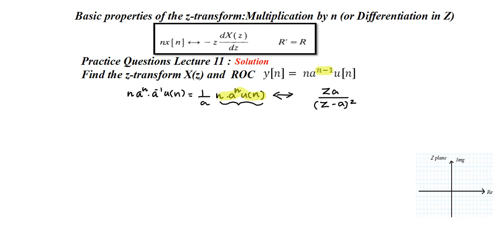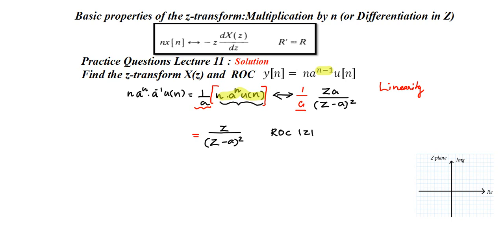There is an extra term 1/a, which is simply a constant multiplying the signal. Applying the linearity property, the Z-transform also obeys linearity, so we multiply by 1/a. The final answer is z/(z - a)², and the ROC is the same: |z| > |a|, meaning the region outside the circle of radius a.